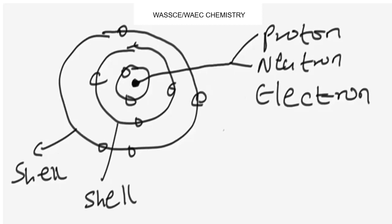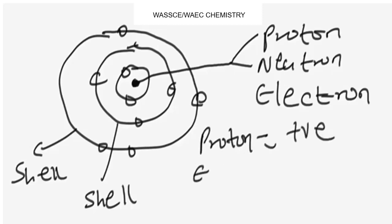Note that the proton is positively charged, whereas the electron is negatively charged, and the neutron has no charge.